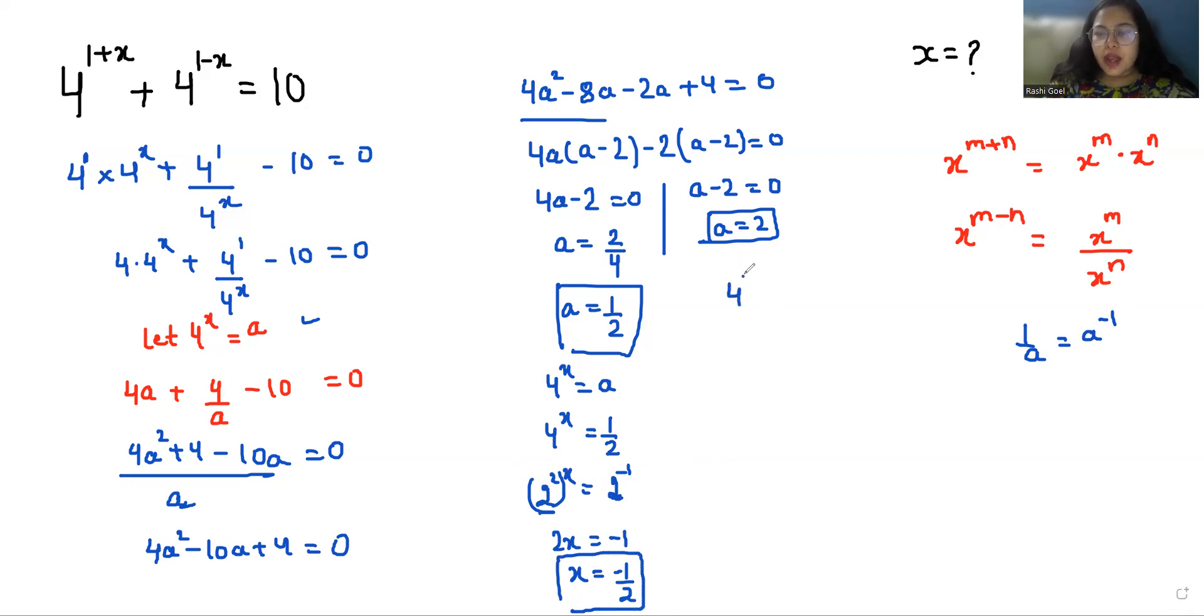Here, 4^x equals a. 4 we can write as (2^2)^x equals 2. In this step, I'm using this identity: (a^m)^n equals a^(mn). So it becomes 2^(2x) equals 2^1.